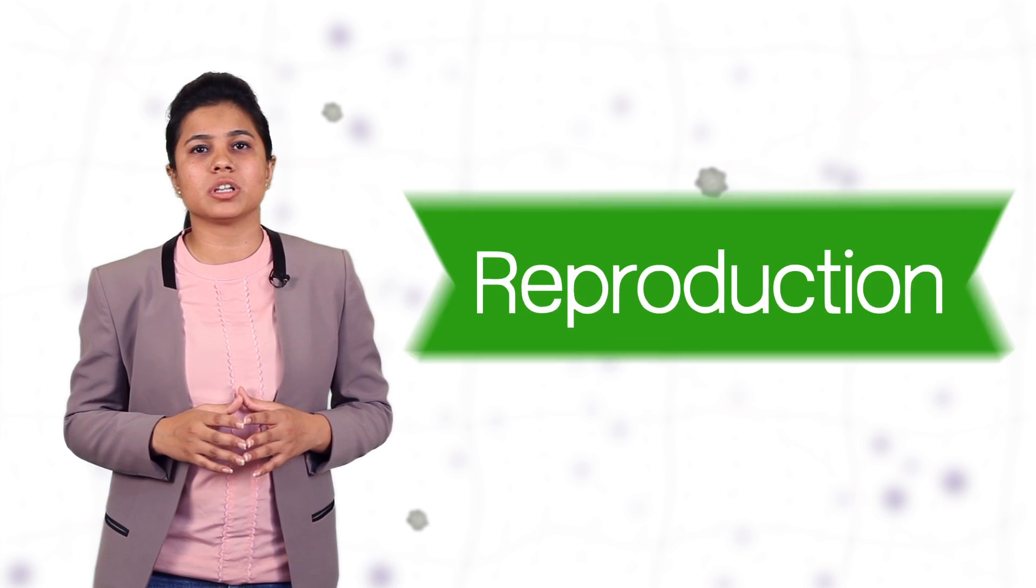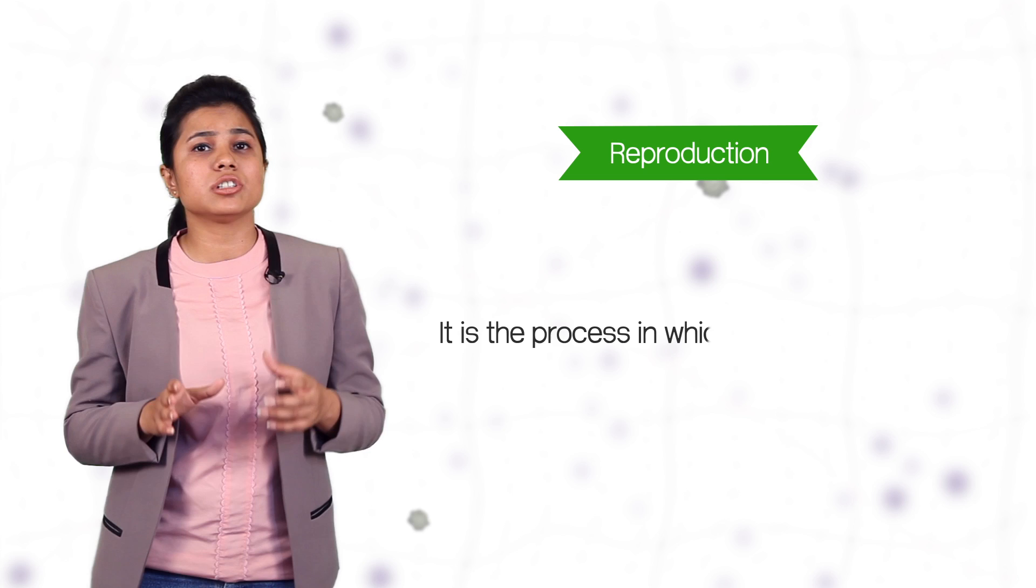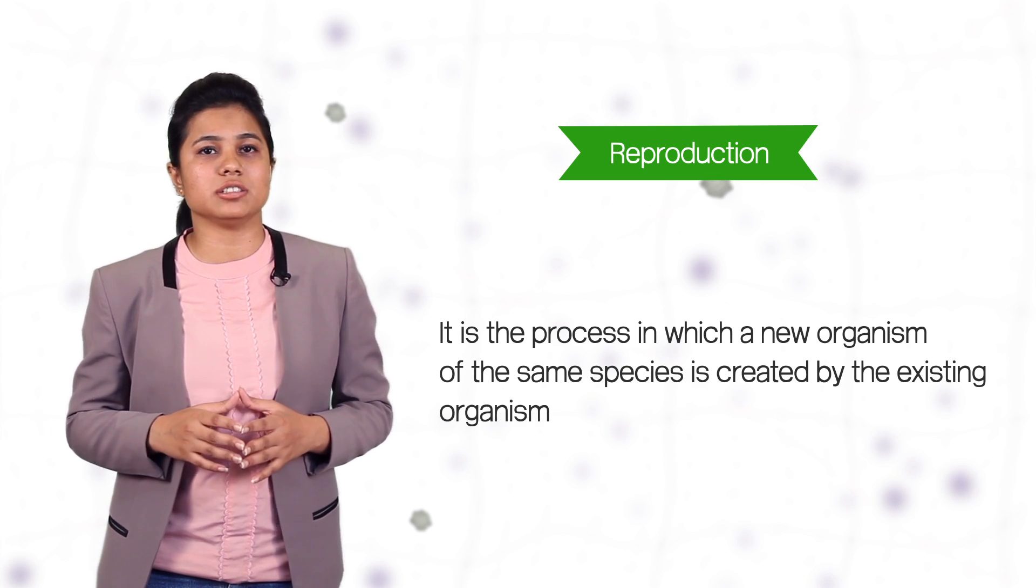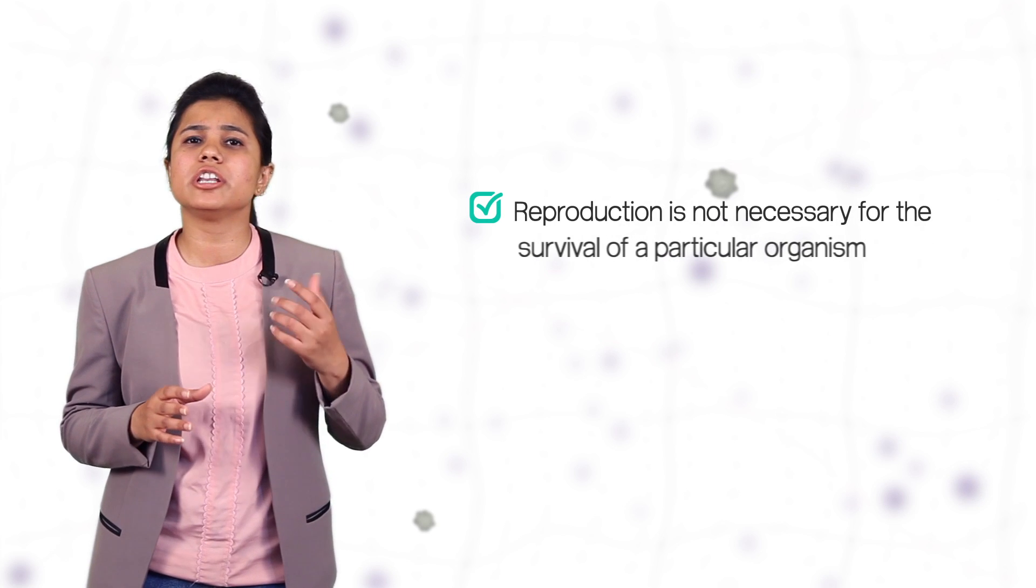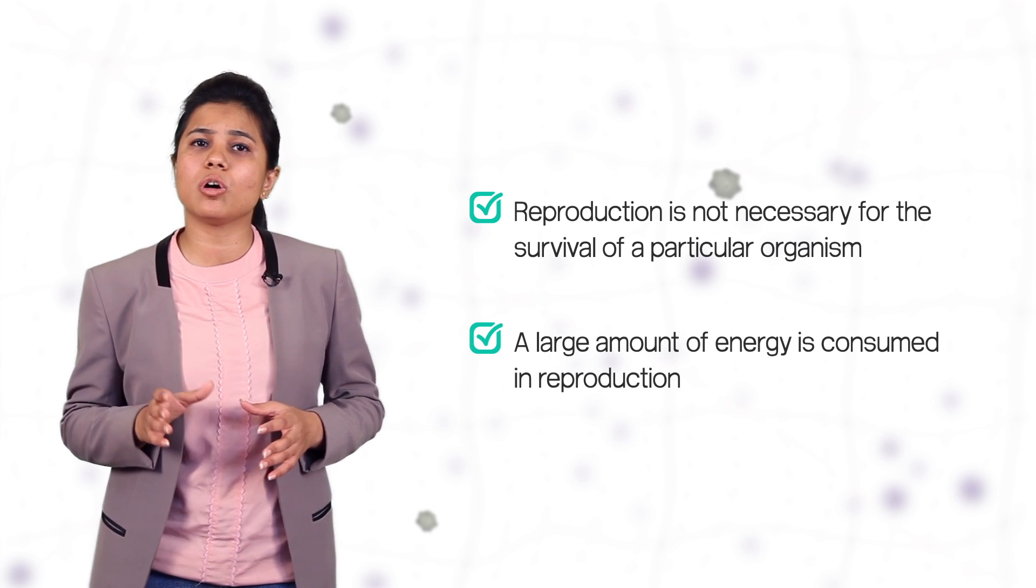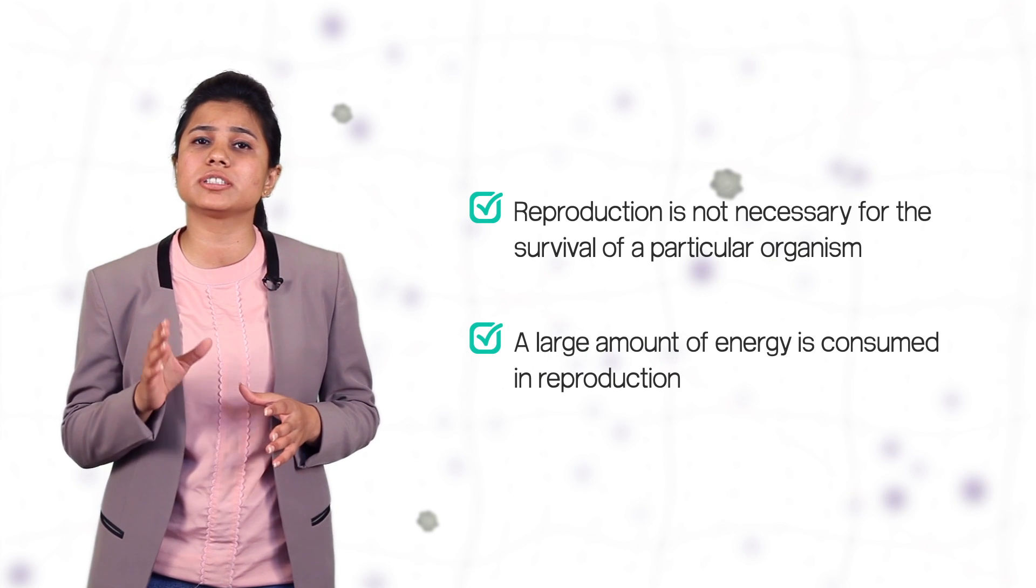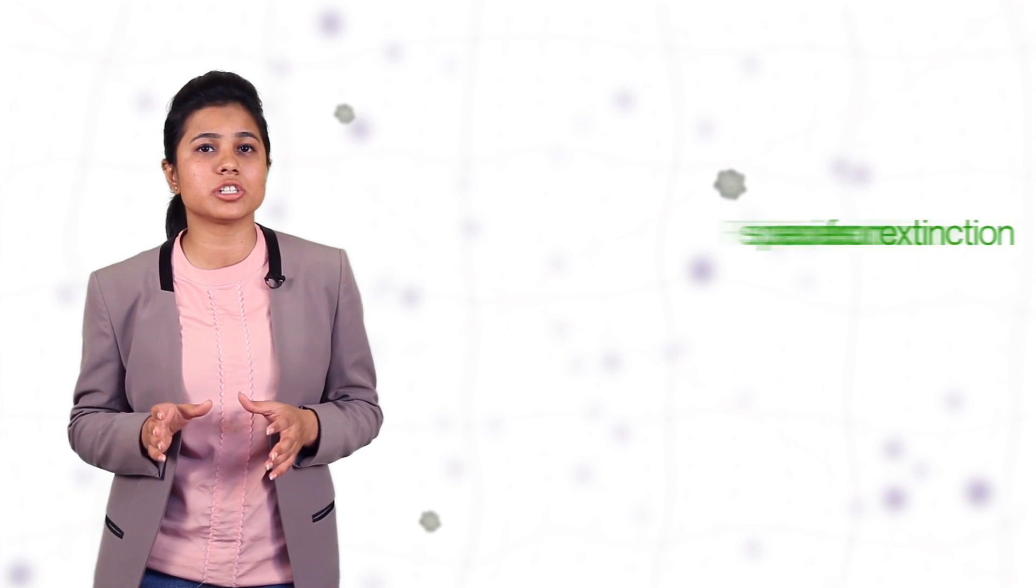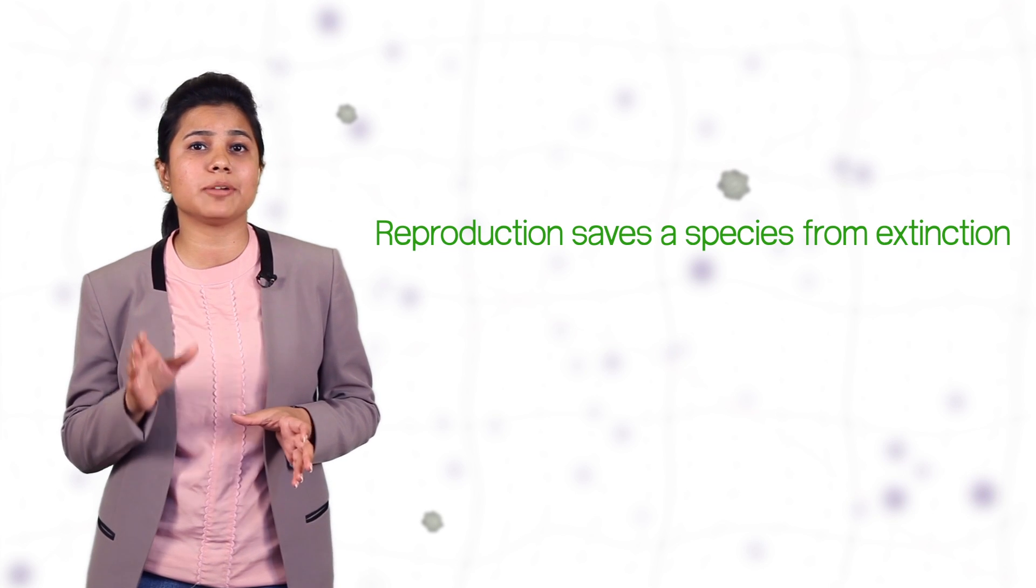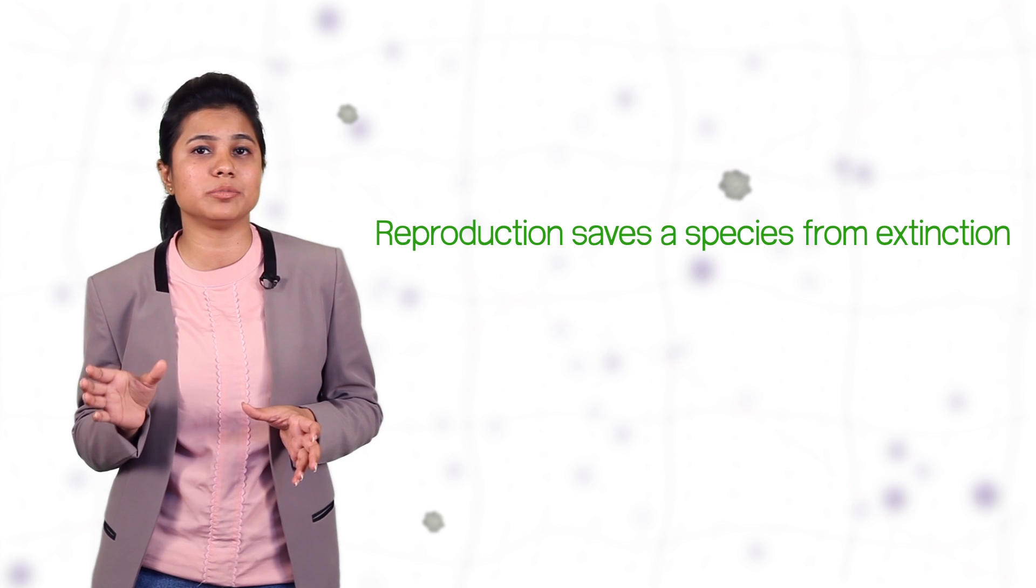The answer is reproduction. It is a process in which a new organism of the same species is created by the existing organism. Unlike other life processes such as nutrition, respiration and transportation that we have studied, reproduction is not necessary for the survival of a particular organism and also a large amount of energy is consumed in this process. But still it is necessary as by reproduction organisms of a particular species are created and it is this reason that particular species of the organism does not become extinct.